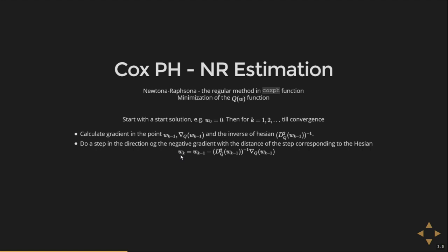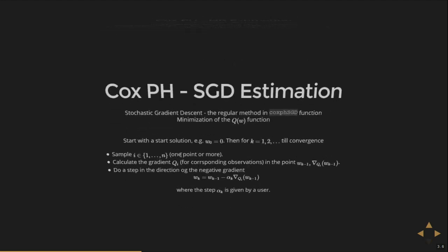The estimation process stops when there is small differences between estimates within subsequent steps. And what about stochastic gradient descent estimation? This is the standard function used in the package I have developed. And this is a little bit different because you do not use the whole dataset. This algorithm, stochastic gradient descent, is rather used for streaming data when the data appear in batches, or in the situation where the data is too big to be stored in RAM, so you have data in blocks.